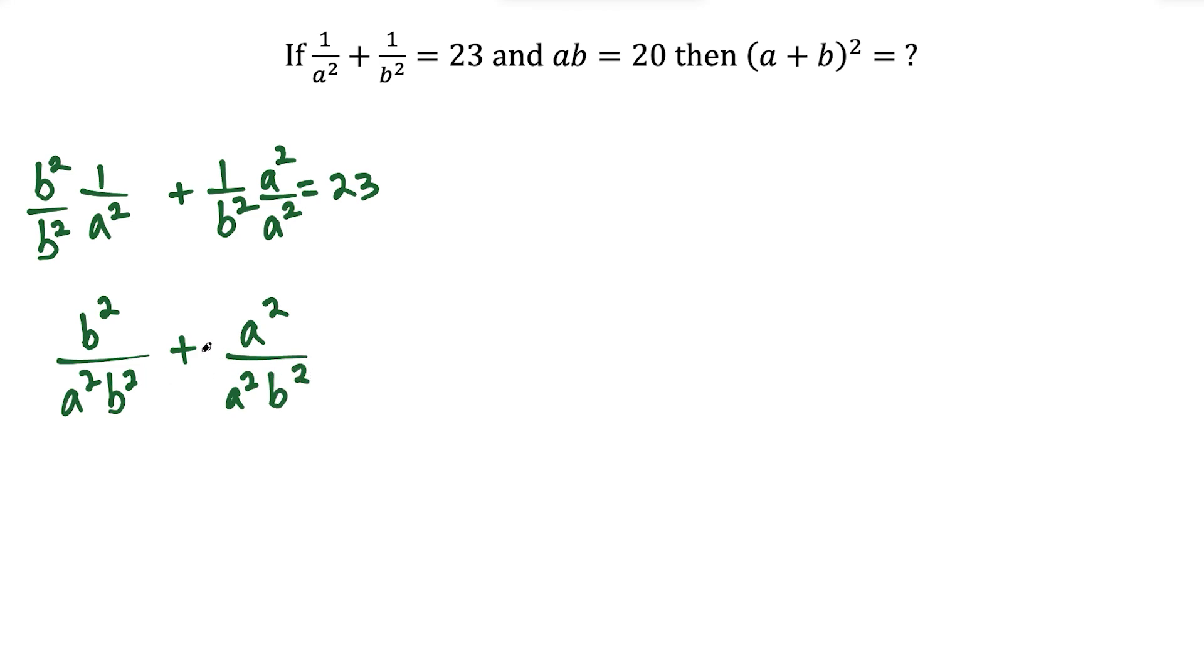I prefer to write the denominator in alphabetical order, because in a moment, we're going to probably make a substitution involving ab equals 20. And that's going to open up the question more. And this is all equal to 23.